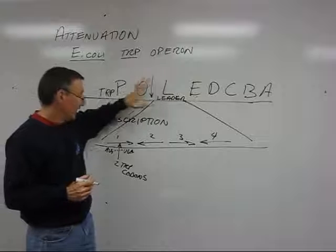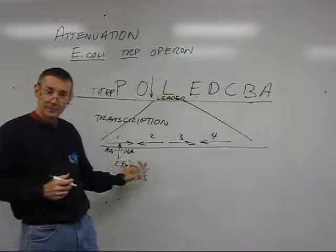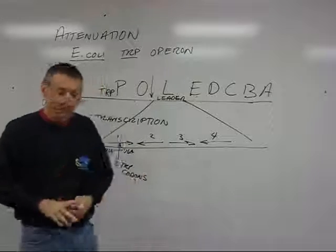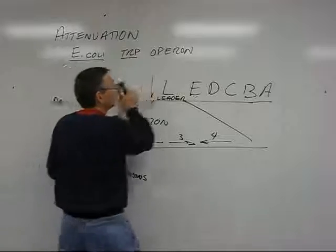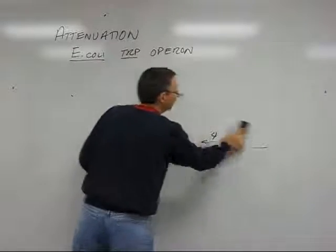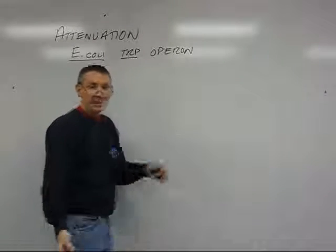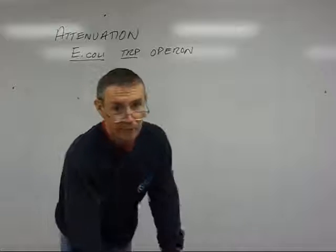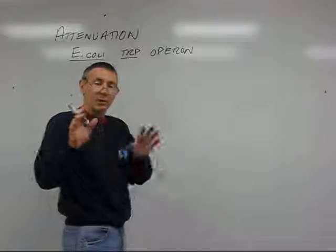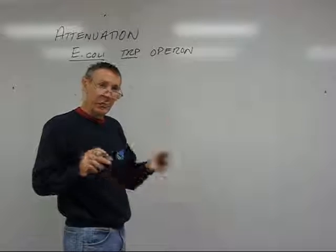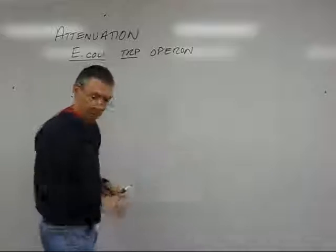When RNA polymerase starts transcribing this region, the first thing it does is transcribe this little mini-gene in region 1. This being a prokaryote, once RNA polymerase has gotten through a portion of that leader sequence — the beginning of it, region 1 — that region is then hanging outside RNA polymerase and is available for a ribosome to bind to it. Let's take a look at what happens if transcription has started even though it shouldn't have, that is, when there's high tryptophan concentration in the cell.